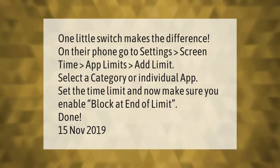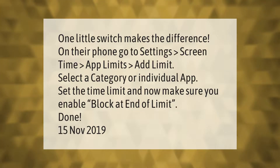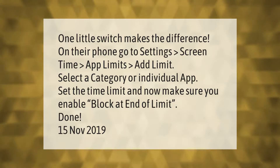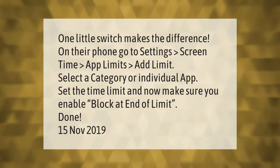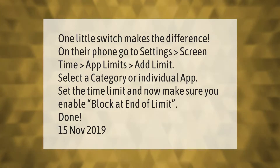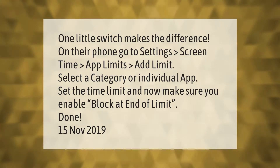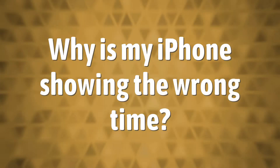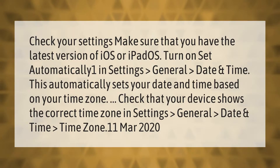On your phone, go to Settings > Screen Time > App Limits > Add Limit. Select a category or individual app, set the time limit, and make sure you enable Block at End of Limit.